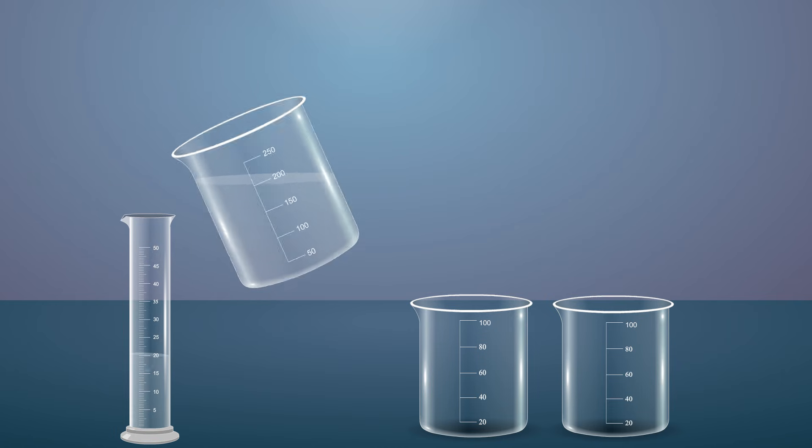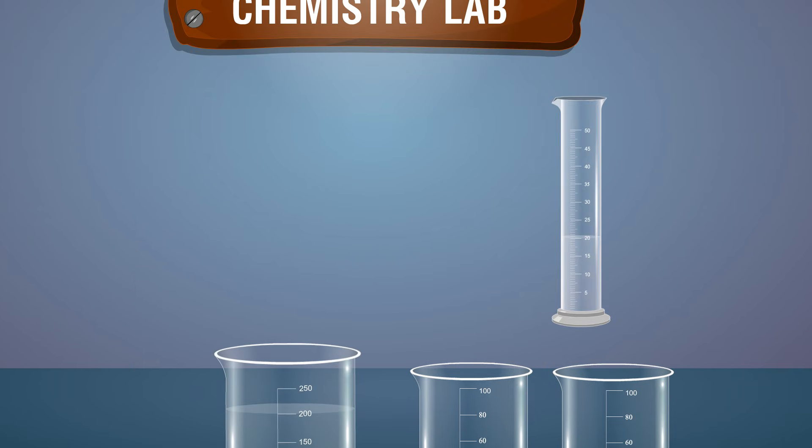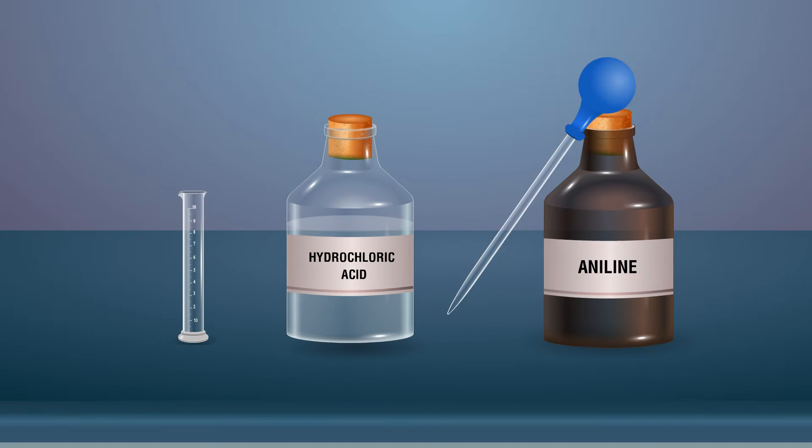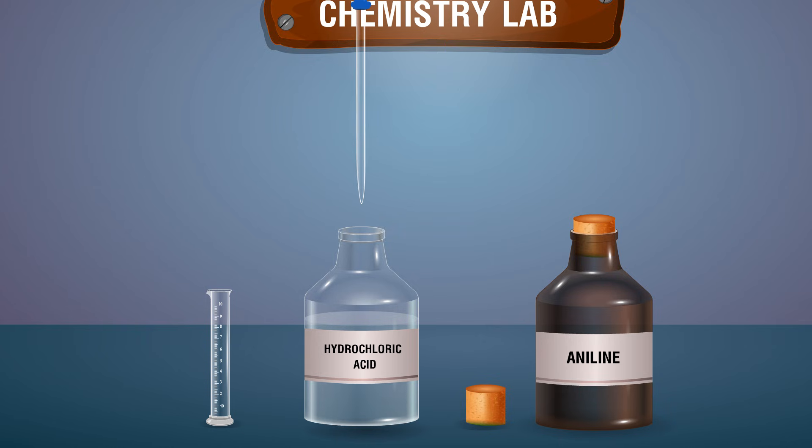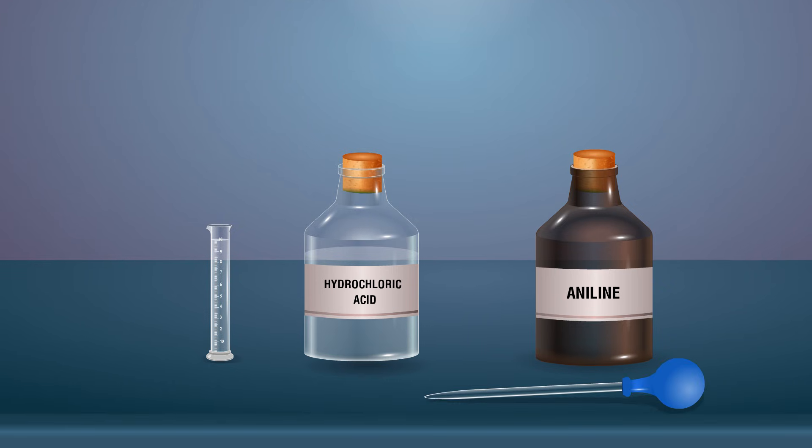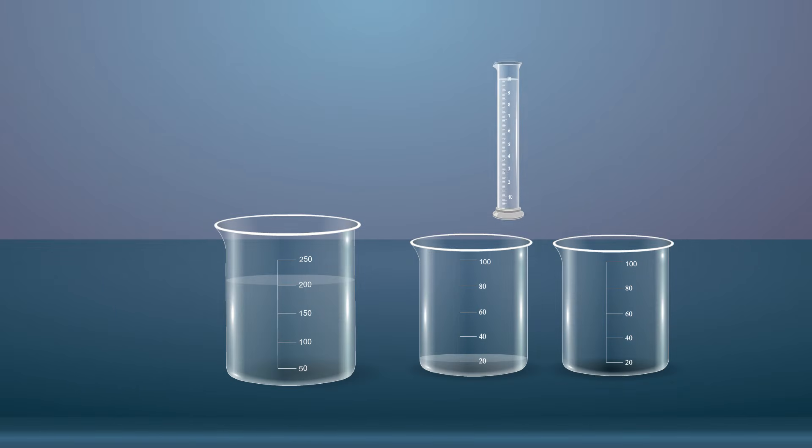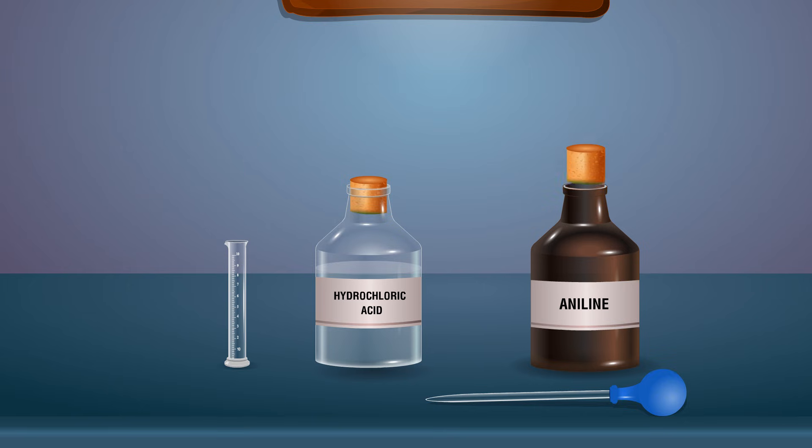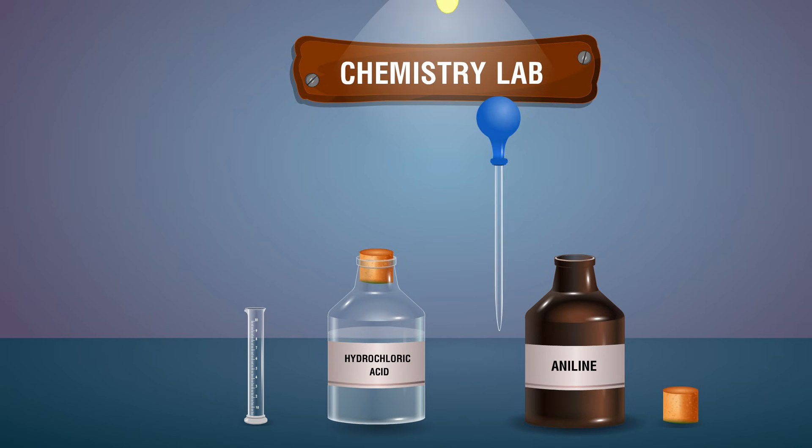Take 20 milliliters of water in a beaker using a measuring cylinder and take 10 milliliters of concentrated hydrochloric acid with the dropper and add it to the water. Add 4.5 milliliters of aniline using a dropper to a measuring cylinder and add it to the mixture.